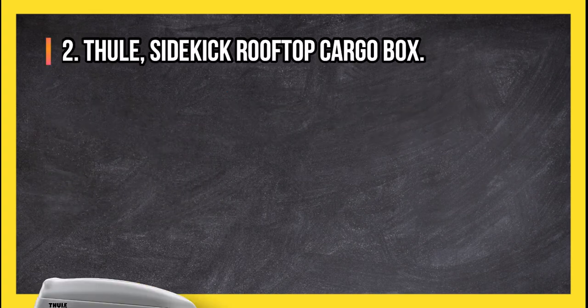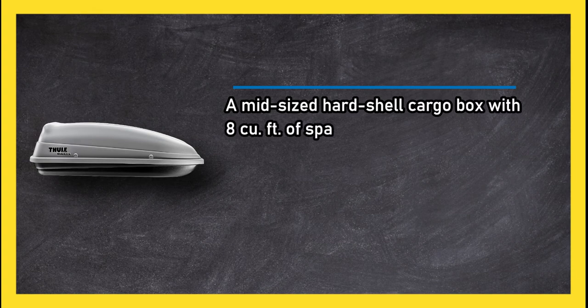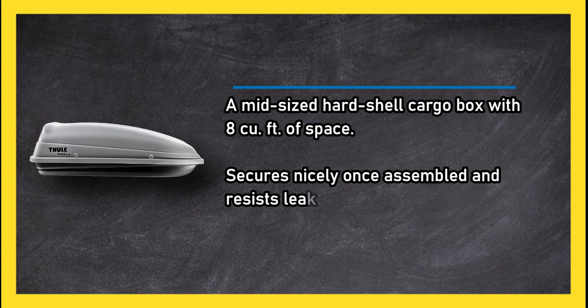At number two, Tula Sidekick Rooftop Cargo Box. A mid-sized hard shell cargo box with 8 cubic feet of space. Secures nicely once assembled and resists leaks.